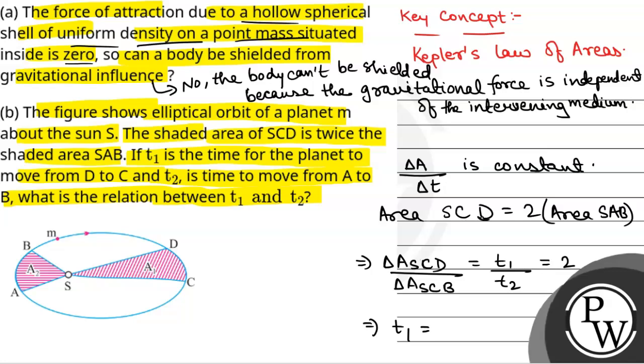Therefore, T1 will be equal to twice T2. Kepler's law of areas is also called Kepler's second law. So the relation between T1 and T2 is T1 equals 2T2. This is the final result.